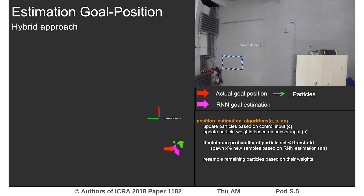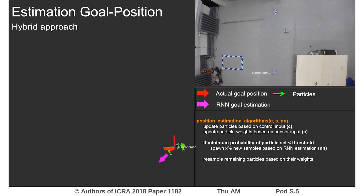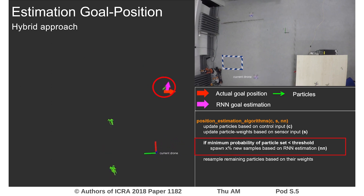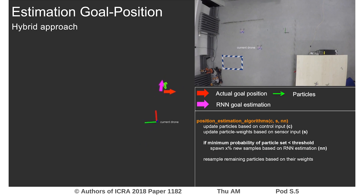By incorporating the network's prediction into the particle filter, we are able to reduce the number of required particles to a minimum, while still accounting for the sensor noise. This reduces the computational overhead, which allows the real-life application on pocket drones.